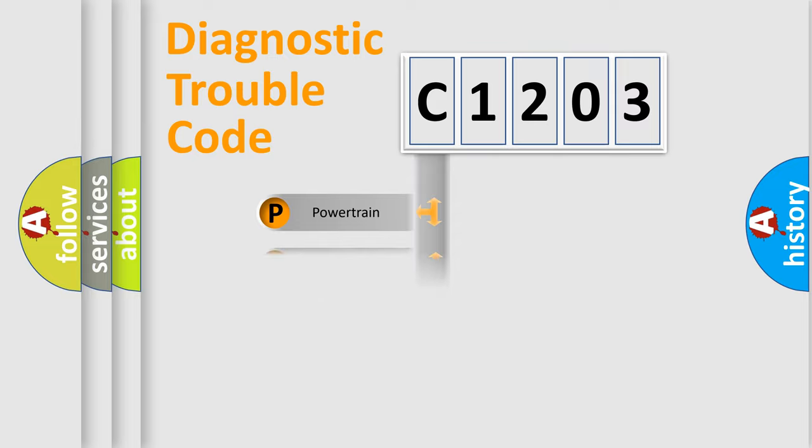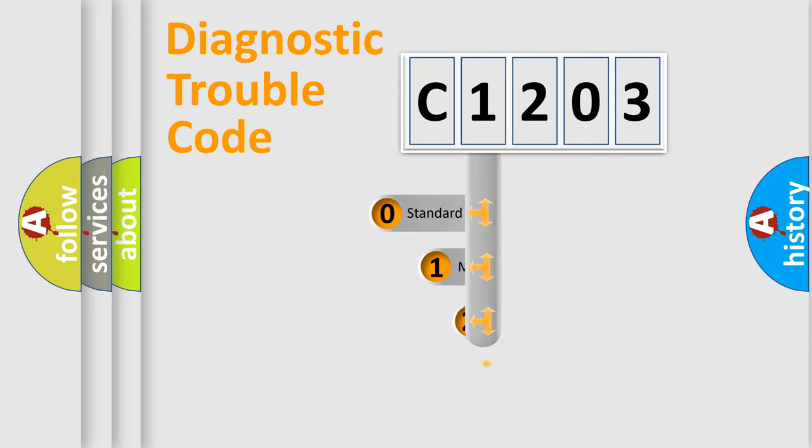Powertrain, Body, Chassis, Network. This distribution is defined in the first character code.